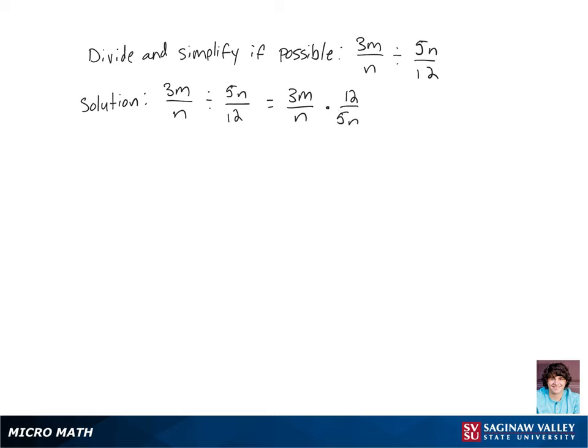Now we're going to multiply across the numerator and the denominator. So we're going to get 3m times 12 over 5 times n times n.